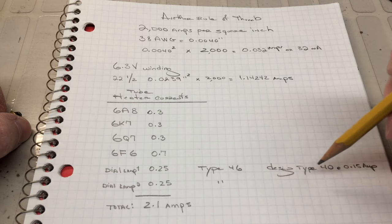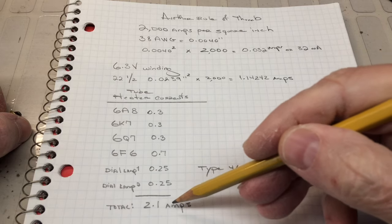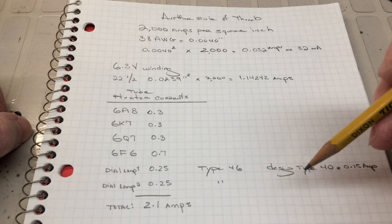Again, when I go back and place the dial lamps in, I'll probably go with Type 40s at 0.15 amps, just to be able to reduce this number down under 2 amps. Let's look at the 5-volt winding for the rectifier tube.